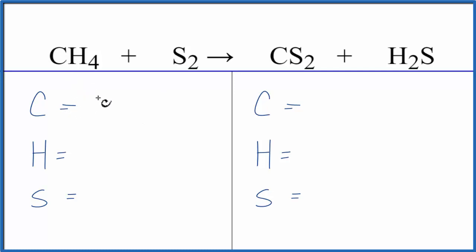Let's count the atoms up. We have one carbon, four hydrogens, and two sulfurs. On the product side, we have one carbon, two hydrogens, and for sulfur, we have two plus this one sulfur here, so we have three sulfur atoms.